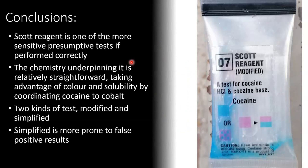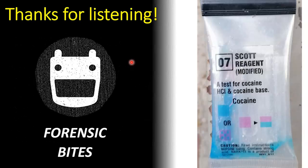To conclude, Scott's reagent is one of the more sensitive presumptive tests, provided it's performed correctly. The chemistry that underpins it is relatively straightforward — it takes advantage of colour and solubility changes when cocaine coordinates to cobalt thiocyanate in water. There are two kinds of tests, the modified and the simplified, but the simplified test is far more prone to false positive results and is less reliable. That's all we have for today. Thanks for listening.